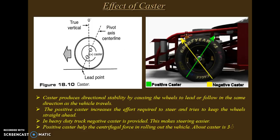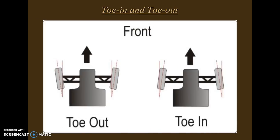Toe-in and toe-out: in toe-out, the distance between the wheels in the front direction is greater than in the rear direction. In toe-in, the distance between the wheels in the outer direction is less than in the inward direction.